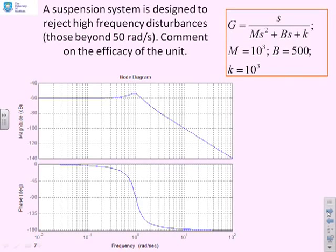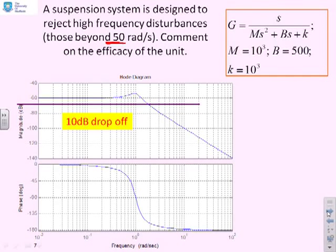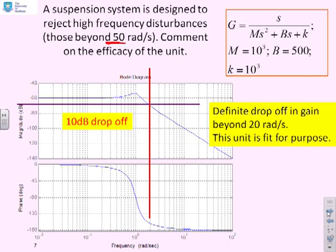Here's a different example. A suspension system is designed to reject high frequency disturbances, where high frequency here is defined as beyond 50 radians per second. Does the system meet the requirements? I'm going to draw a 10dB drop-off. 10 is a bit arbitrary, but that's a significant drop-off compared to steady state. There's the line marked in purple, and there's the frequency that you get with that. That frequency is at 20 radians per second. What you'll notice is once you get into this region here, there's a very fast drop-off of gain. The slope is certainly of the order of 20dB per decade or 40dB per decade.